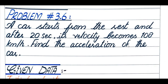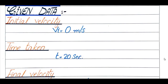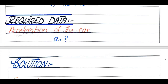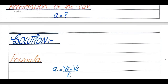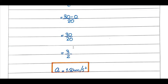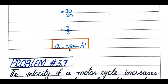Problem number 3.6: A car starts from rest and after 20 seconds its velocity becomes 108 km/h. Find the acceleration. Initial velocity is 0 m/s, time is 20 seconds. Converting 108 km/h to m/s by multiplying by 1000 and dividing by 3600 gives 30 m/s. Using a = (vf − vi) / t: 30 / 20 = 1.50 m/s².